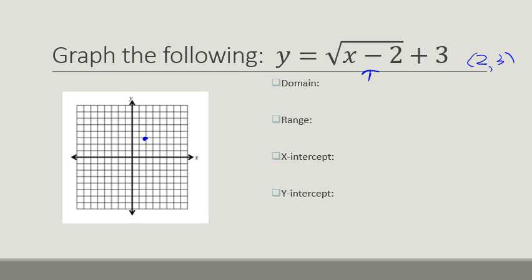And then the point 1, 1, we'd go over 1 and up 1 here because we've gone up right 2 and up 3. To graph 4, 2, we would go over 2 and up 3 again.